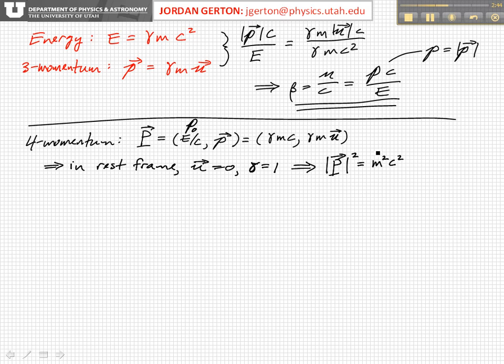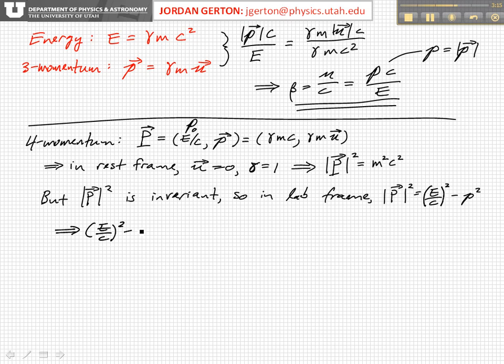But this is invariant. So in the lab frame, p squared is, in general, just e over c squared minus little p squared. Remember, when you dot a four vector into itself, you get a minus sign here, not a plus sign, as you would with a normal vector. So these two things together imply that e over c squared minus little p squared is equal to m squared c squared, which in turn gives us that e squared is equal to m squared c to the fourth plus little p squared times c squared.